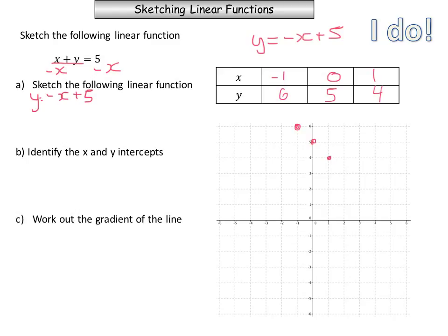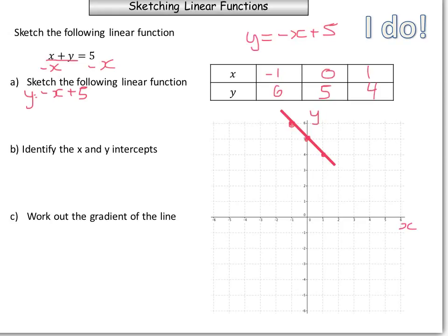The next step is to label our axes — x and y — put a line through our points, put arrows on the end of our line, and write the equation of the line which is y equals negative x plus 5.